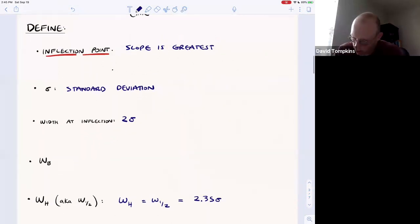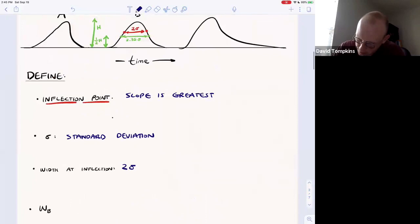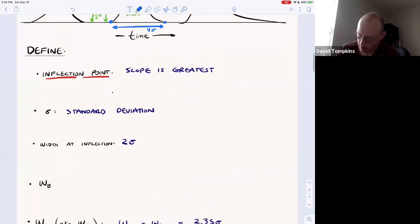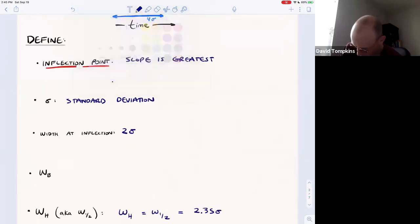If you go all the way down to the width at the baseline, the width of the base is 4 sigma.